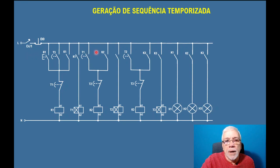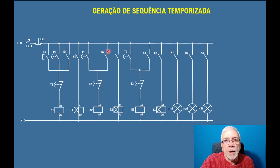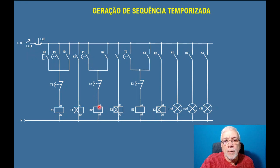E a contactora seguinte — repara que as estruturas são bem parecidas. Sempre você vai ter um selo e sempre vai ter um contato fechado no ramo principal para desligar. O selo é responsável pela manutenção da ligação da contactora. E o contato abridor, que fica em série com o ramo principal, é responsável pelo desligamento da contactora. E tem que ter alguém aqui para fazer a ligação inicial, que é o contato do primeiro temporizador. Entrou a segunda contactora, ligou o segundo temporizador. O segundo temporizador começou a contar o tempo. Atingido o tempo, ele vai lá e desliga a segunda contactora e liga a terceira.